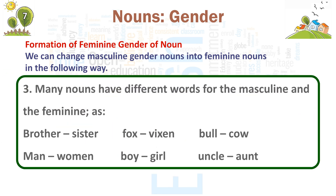3. Many nouns have different words for the masculine and the feminine: brother — sister, fox — vixen, bull — cow, man — woman, men — women, boy — girl, uncle — aunt.